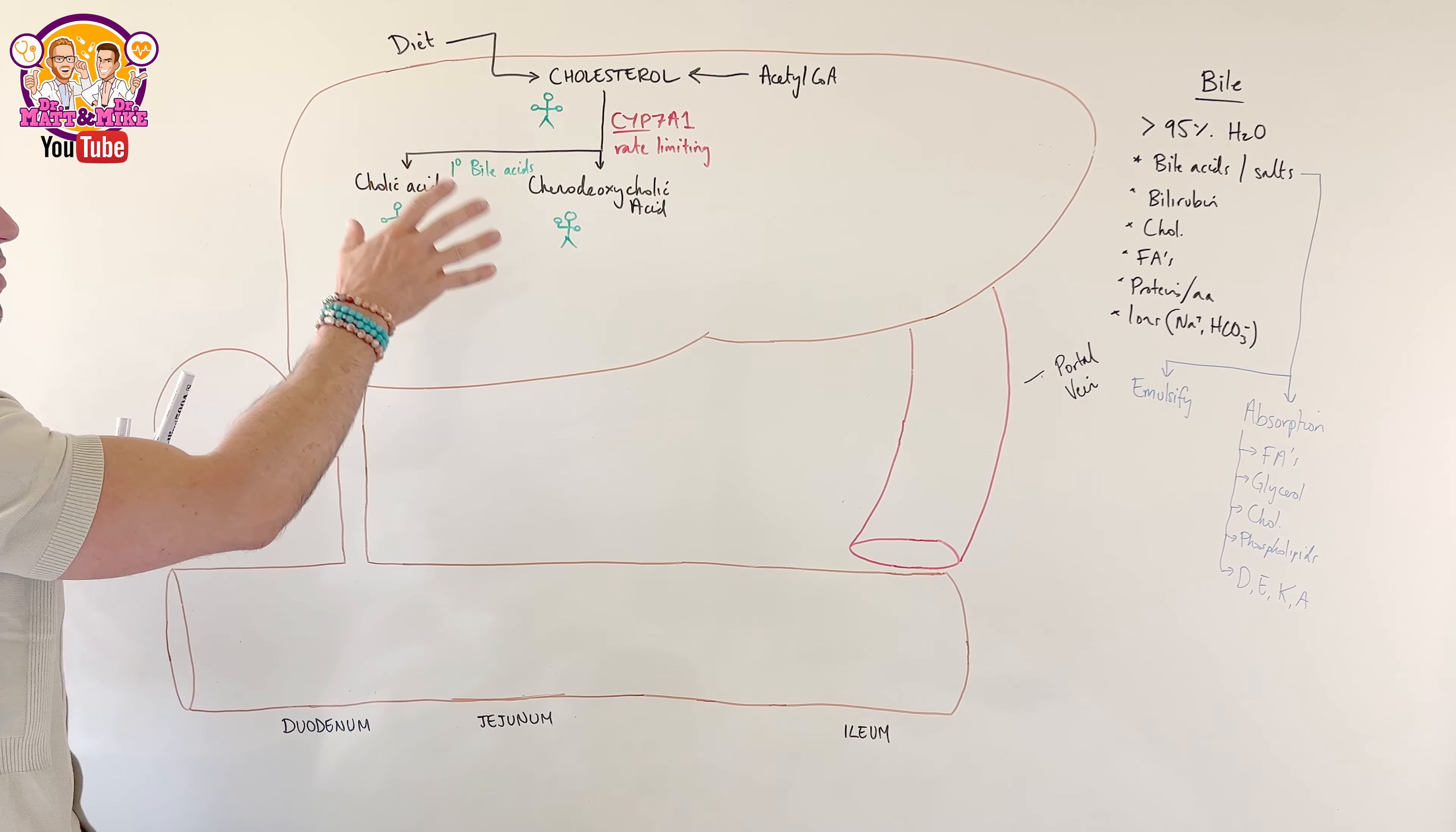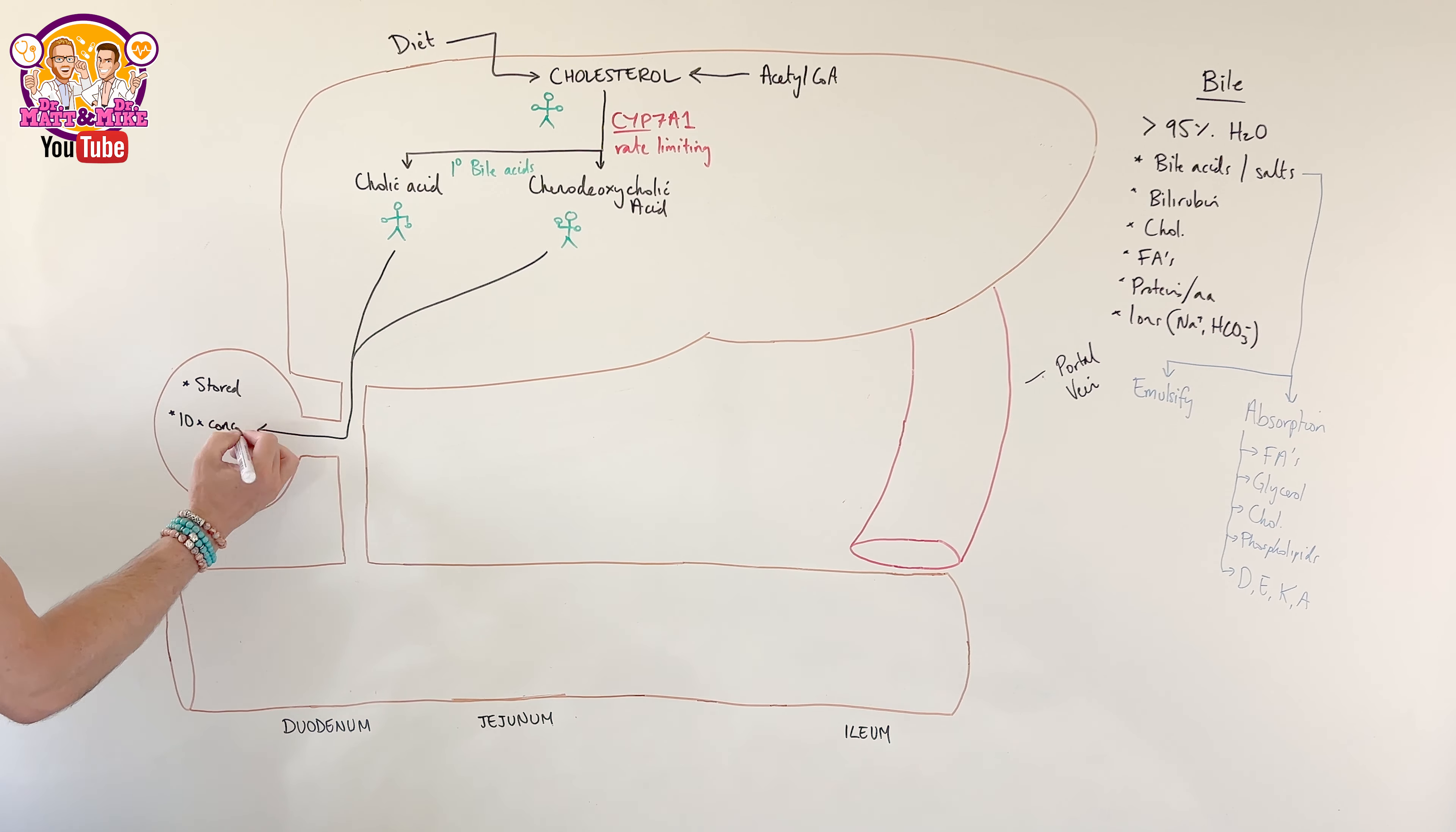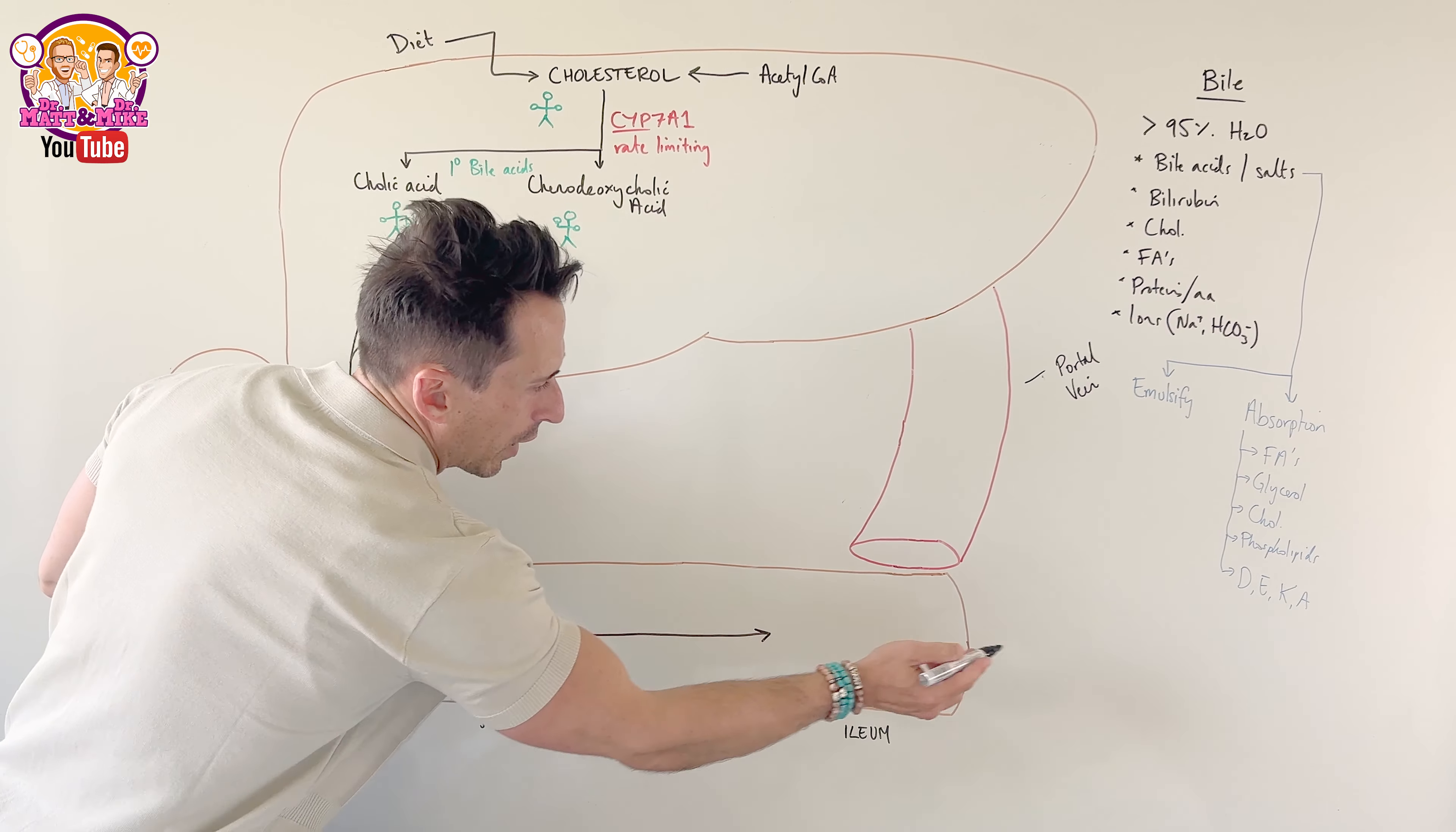Now, what happens with these? Well, couple of things can happen. First is that they are secreted out of the intestines and they are sent off to the gallbladder. Now in the gallbladder, they can just be stored and they can be concentrated by up to 10 times more concentrated. They can also just be secreted directly into the intestines where they remain predominantly unchanged until they get all the way up to the ileum or even the cecum.